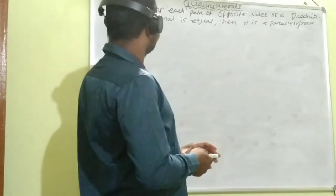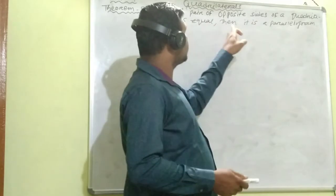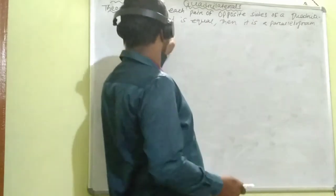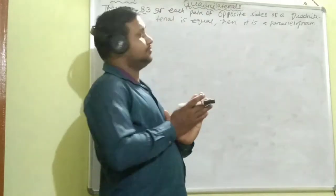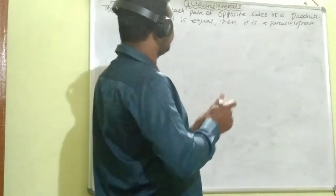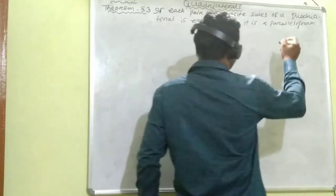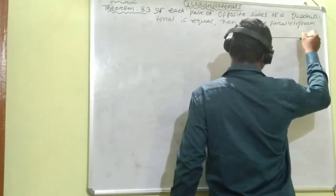Theorem 8.3 says if each pair of opposite sides of a quadrilateral is equal, then it is a parallelogram. So given a quadrilateral, suppose...